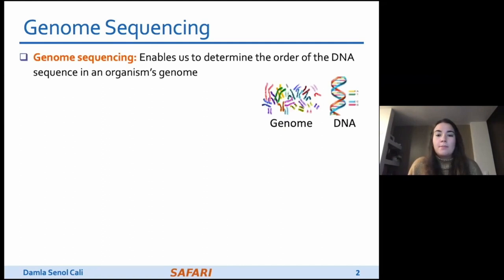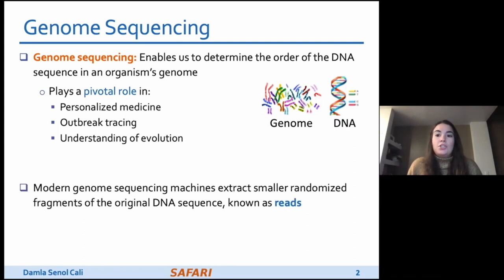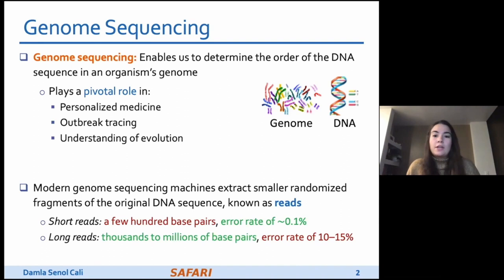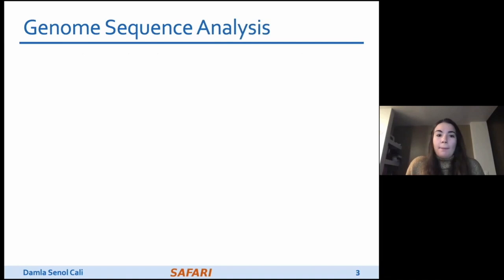Genome sequencing enables us to determine the DNA sequence of an organism and plays a pivotal role in areas such as personalized medicine, outbreak tracing for COVID-19, and the understanding of evolution. Modern genome sequencing machines extract small randomized fragments of the original DNA sequence, which we call reads. State-of-the-art machines produce either short reads, with a very low error rate around 0.1%, or long reads with thousands to millions of base pairs and an error rate of 10 to 15%.